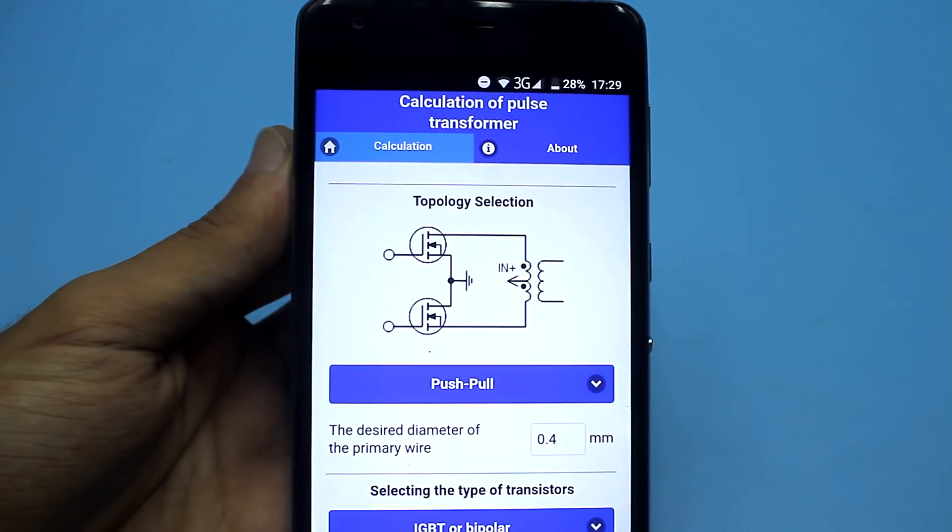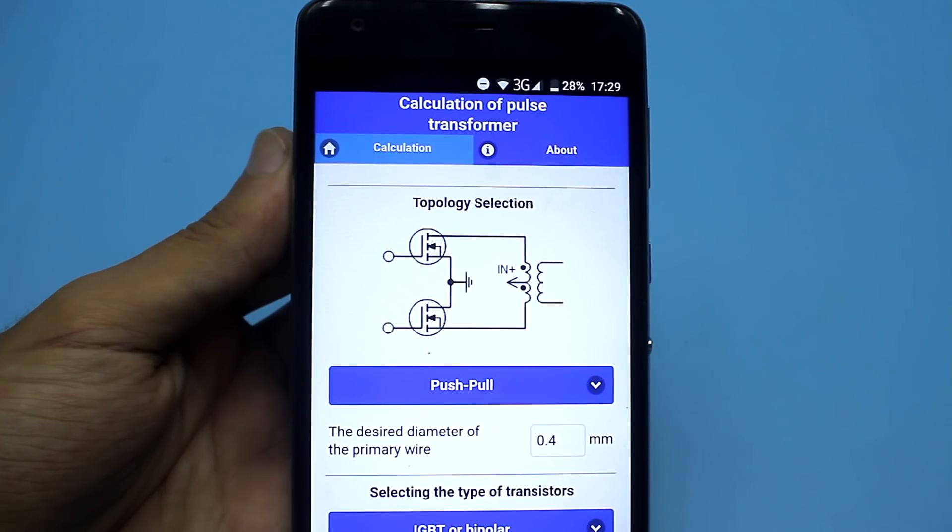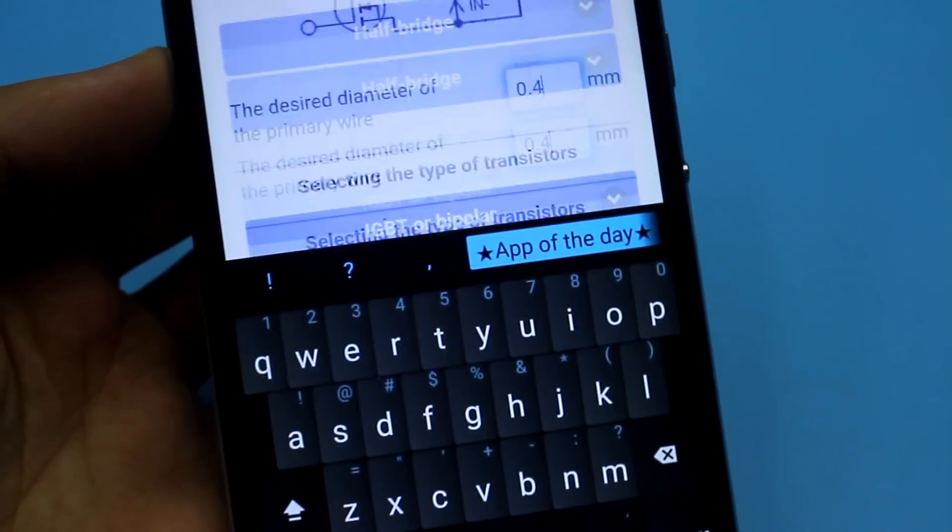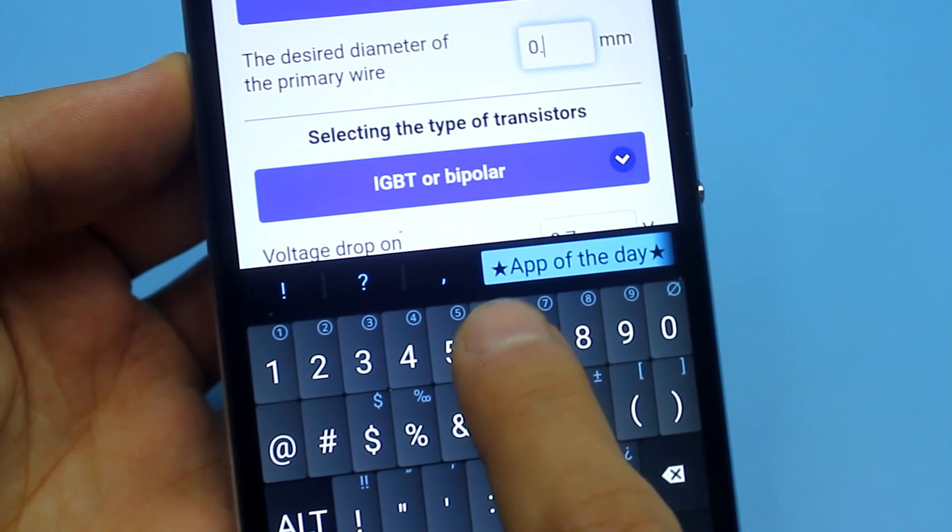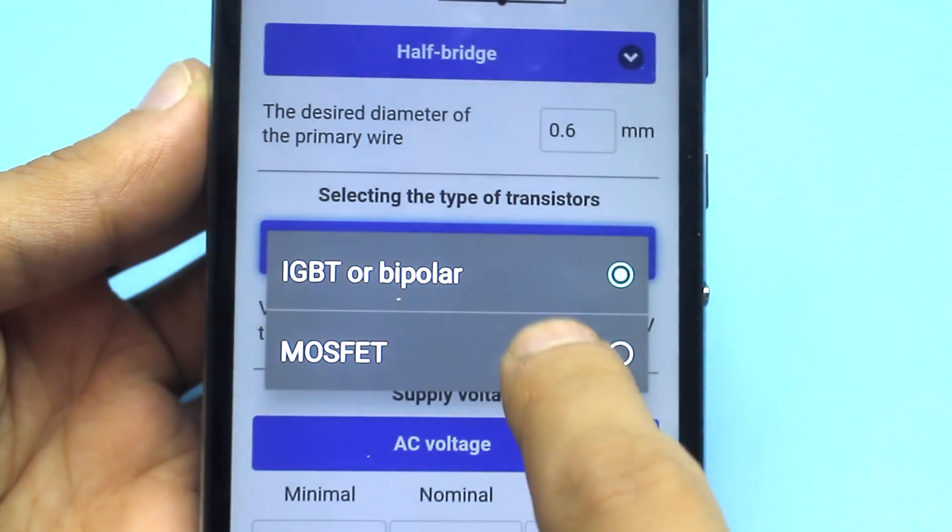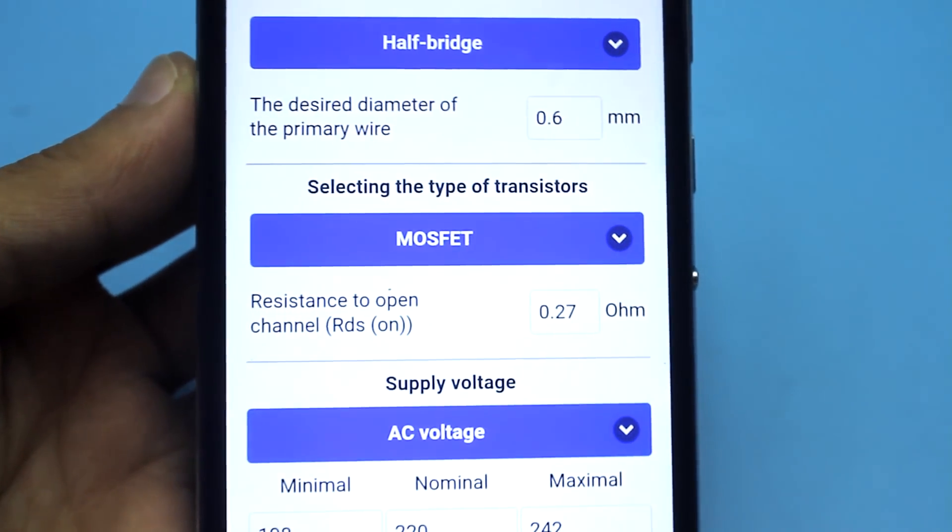Open the application and select the topology of the converter. In our case, it's a half bridge. Then, choose the desired wire diameter of the primary winding. Next, choose the type of power transistors. We use field effect transistors, so choose MOSFET.